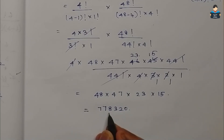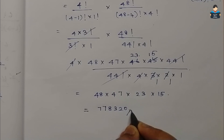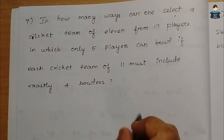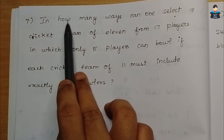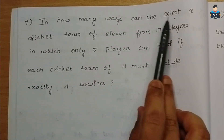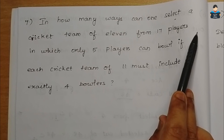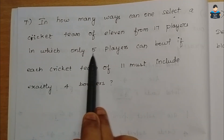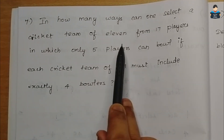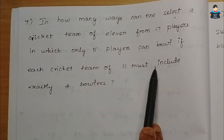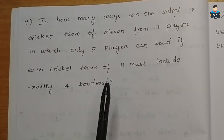So 7,78,320 is our final answer for Question 6. Next is Question 7: In how many ways can one select a cricket team of 11 from 17 players, in which only 5 players can bowl, if each cricket team of 11 must include exactly 4 bowlers?